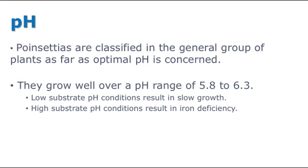pH. Poinsettias are classified in the general group of plants as far as optimal pH is concerned. They respond well to a pH range of 5.8 to 6.3. Low substrate pH conditions result in slow growth, while high substrate pH conditions result in iron deficiency. We will be discussing recognizing pH-related symptoms and management steps to avoid problems in this video.